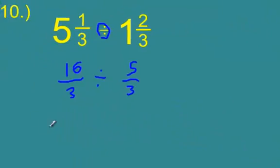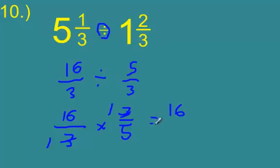Alright, sixteen-thirds divided by five-thirds. Keep, copy, whatever you want to call it. Change, flip. We can cross-reduce here. These threes become ones. Sixteen times one is sixteen. One times five is five. Sixteen-fifths is really equal to five goes into sixteen three times, one left over. Three and one-fifth.